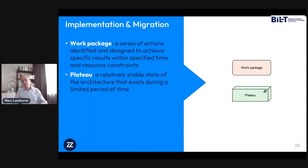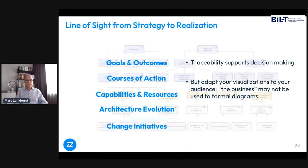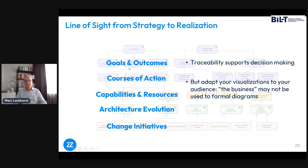Those are the concepts I tend to use most in business architecture, but not exclusively. The business layer with things like business process is more implementation-oriented but might still be business architecture. That gives you the line of sight from goals and outcomes via your strategy, capabilities, and resources, the architecture evolution, and the change initiatives. That traceability is really important for decision making — it lets you analyze how a project contributes to strategic goals via all the stuff in between, rather than approving projects because somebody had a loud voice. You want to base decisions on the facts.